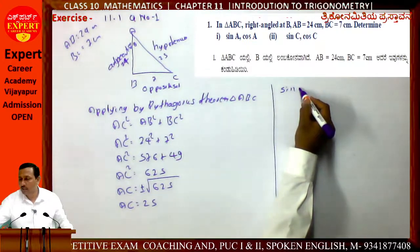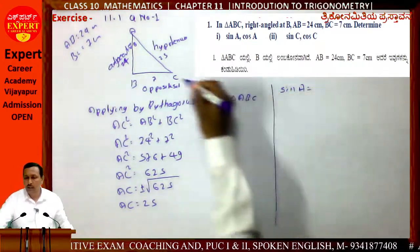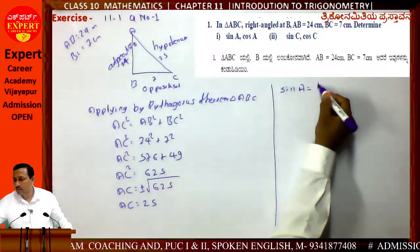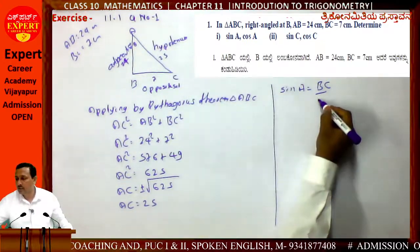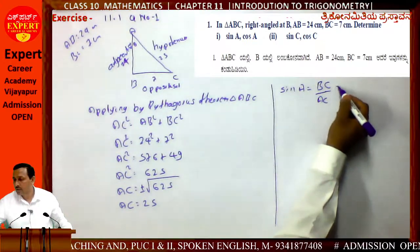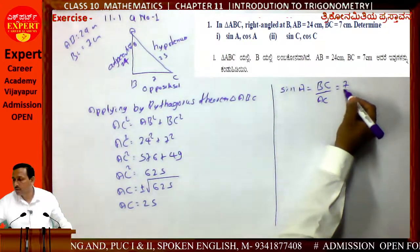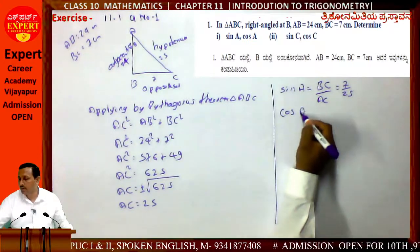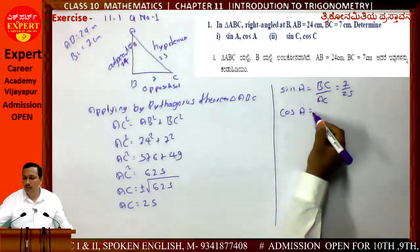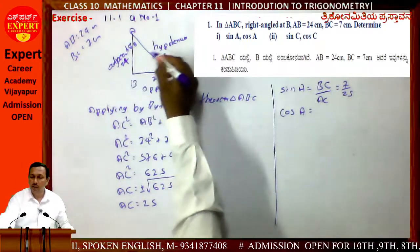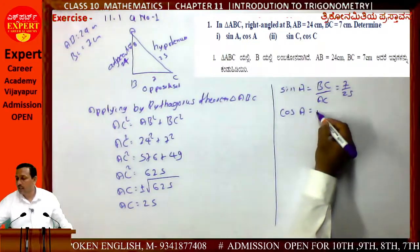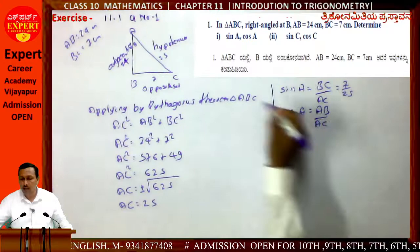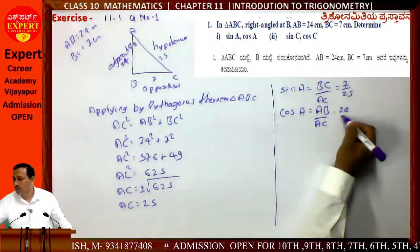Sin A = opposite by hypotenuse = BC by AC = 7 by 25. Cos A = adjacent by hypotenuse = AB by AC = 24 by 25.